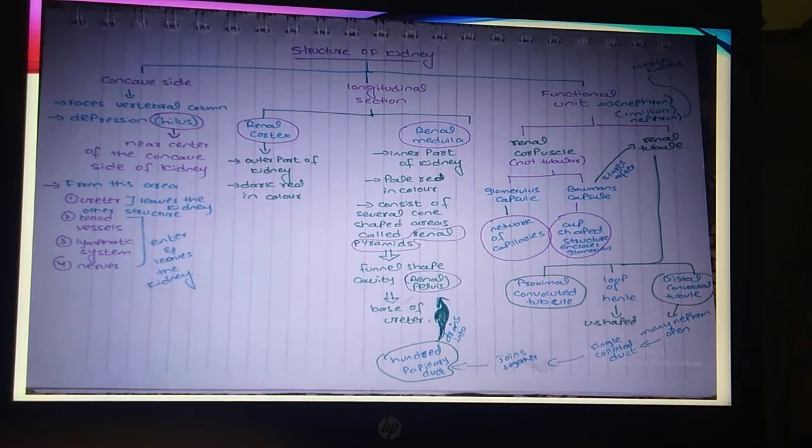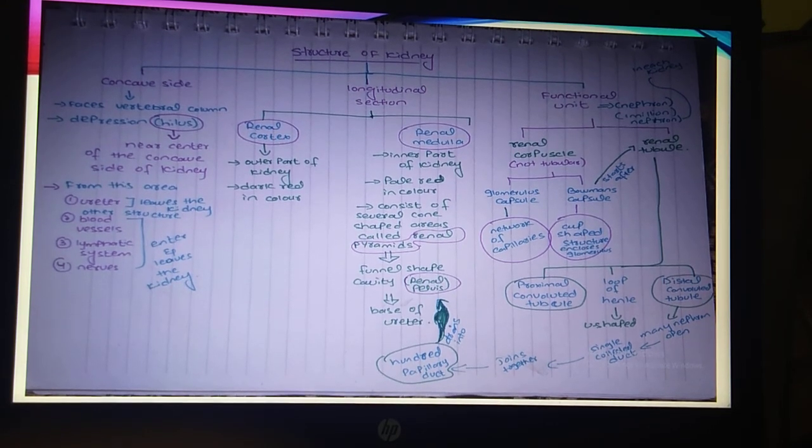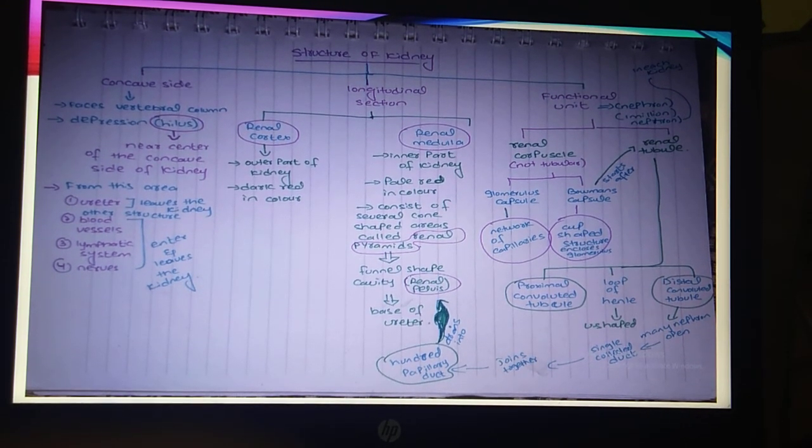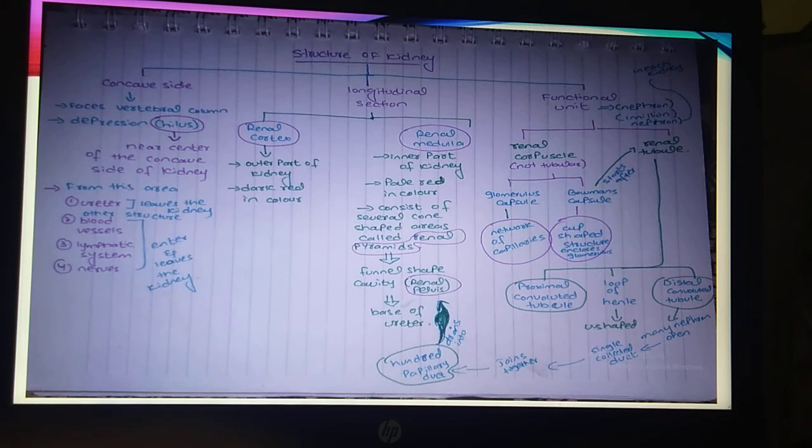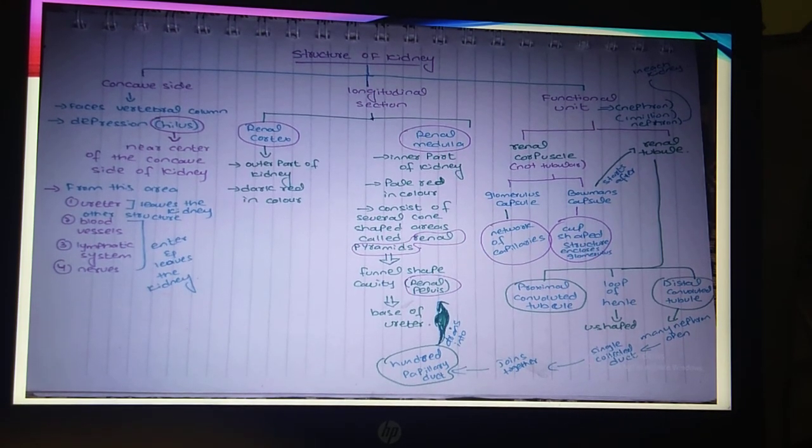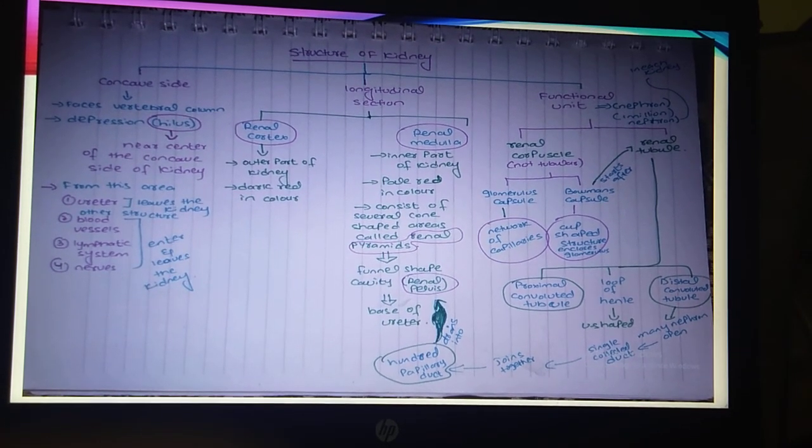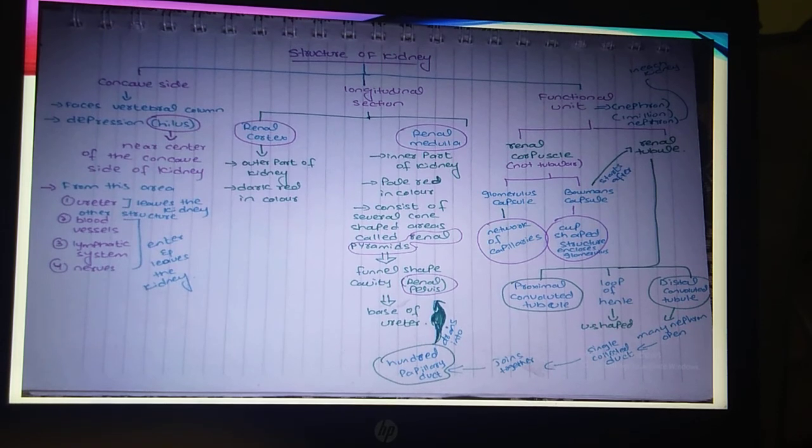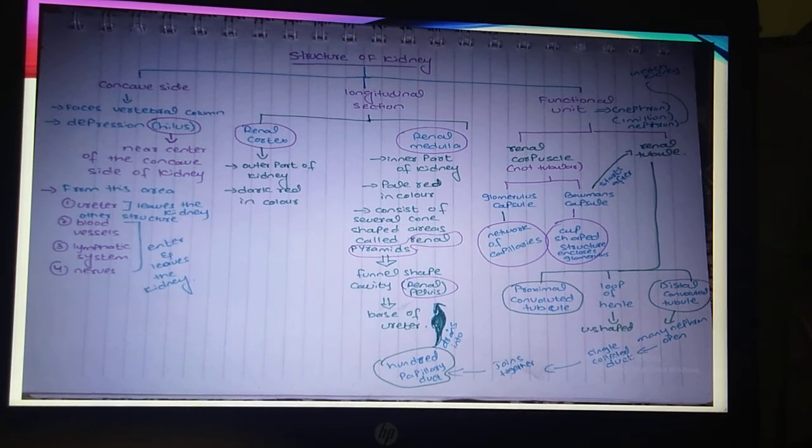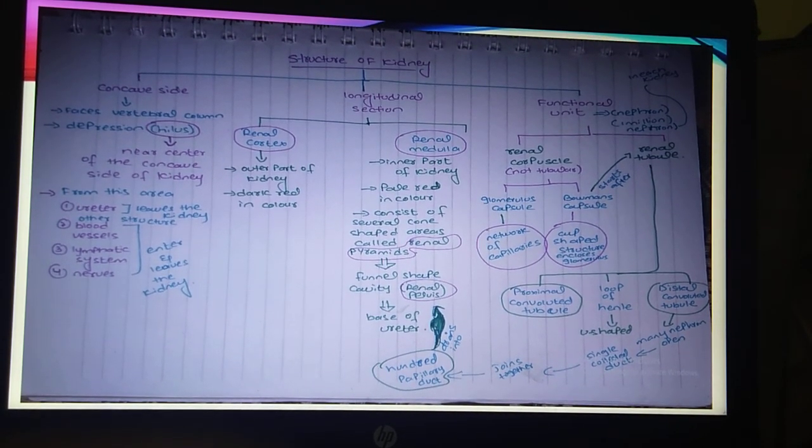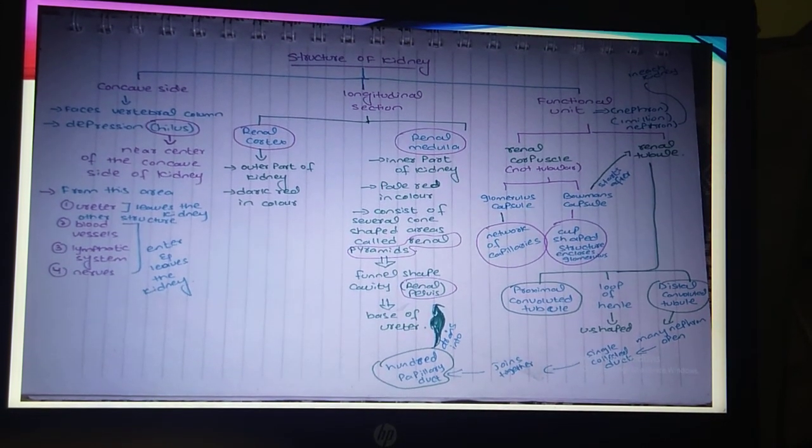جو آپ کے پاس لونگیچوڈنس سیکشن آ رہا ہے that is consist of two parts: renal cortex and renal medulla. Outer part جو ہے کڈنی کا اسے رینل کارٹیکس کہتے ہیں اور وہ ڈارک ریڈ کلر ہوتا ہے۔ اور جو انر پارٹ ہوتا ہے اسے رینل میڈولا کہتے ہیں جو کہ پیل ریڈ یعنی ہلکا سا ریڈ کلر کا ہوتا ہے۔ اس میں کون شیف سٹرکچر ہوتے ہیں، کون شیف ایریاز پریزنٹ ہوتے ہیں جنہیں کہ رینل پائرامیڈس کہا جاتا ہے اور رینل پائرامیڈس جو ہیں فردر آکے موف کرتے ہیں۔ ان کی فنل شیپ کیویٹی بن جاتی ہے جسے رینل پیلویس کہتے ہیں اور وہ یوریٹر کی بیس ہوتی ہے۔